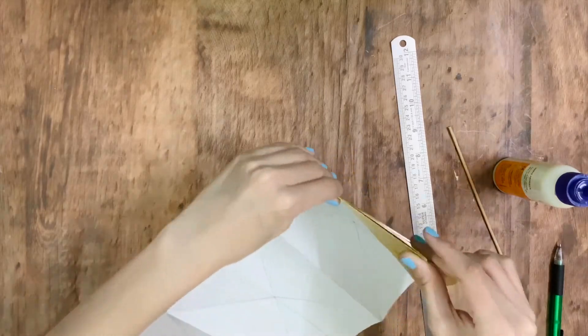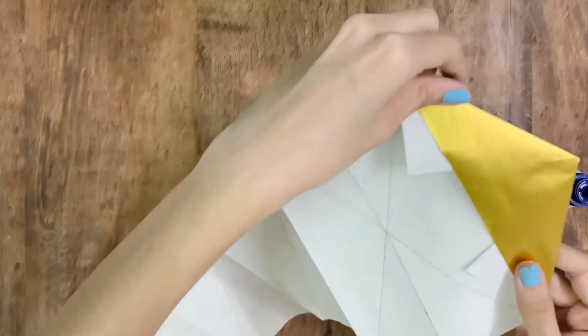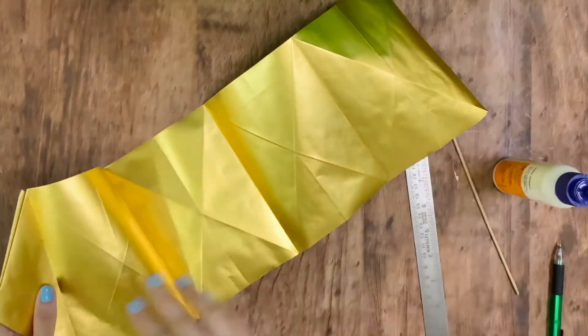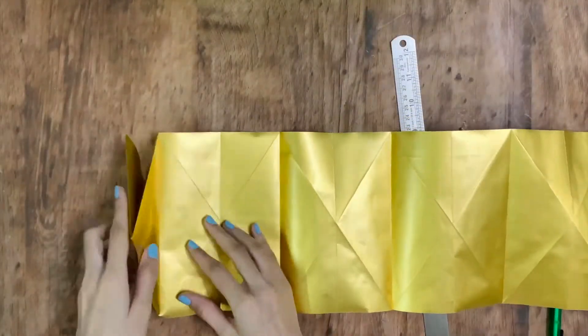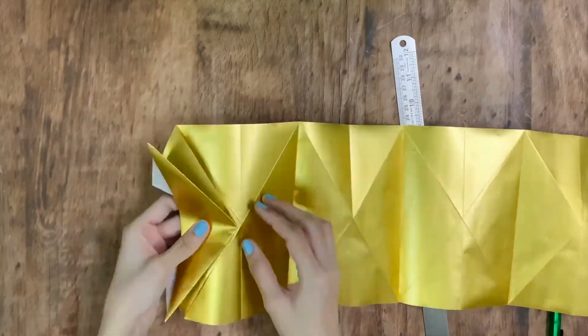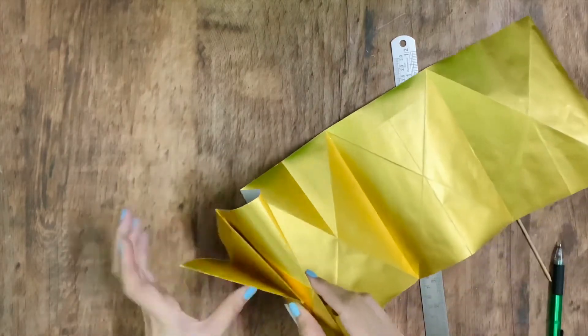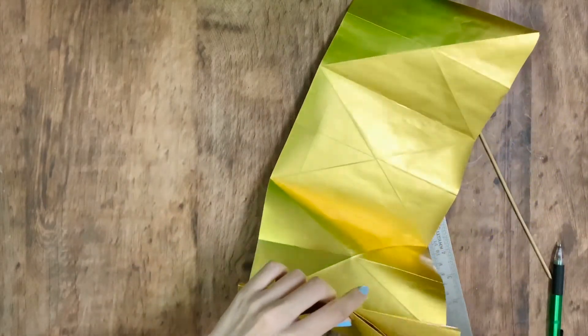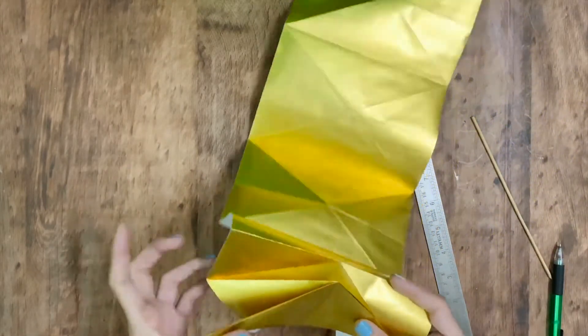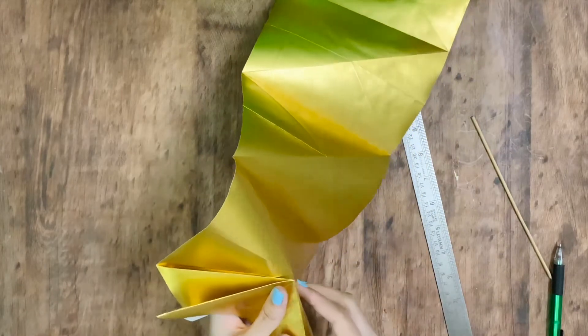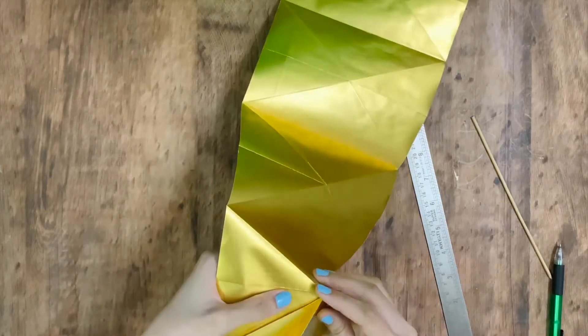Now you will have two triangles. First fold the paper into half, then push one side of the triangle inside and repeat the same on the other side.